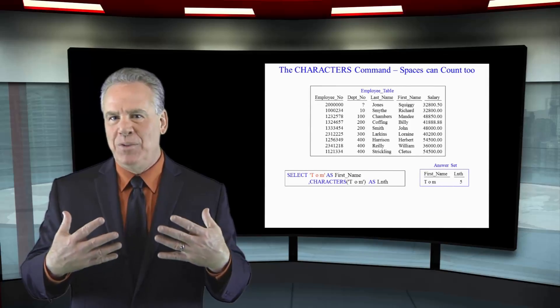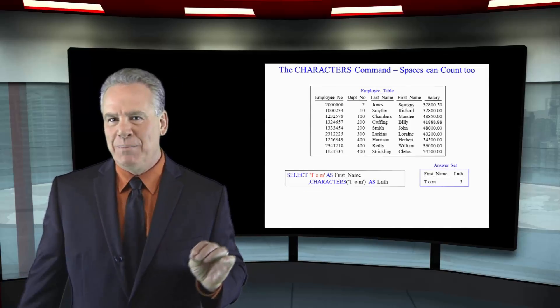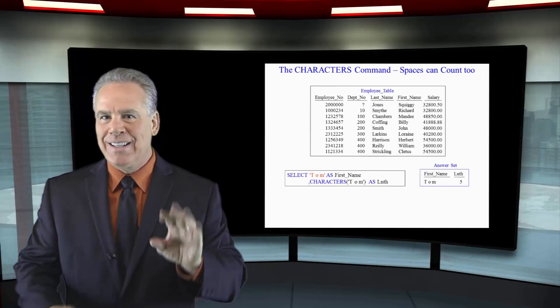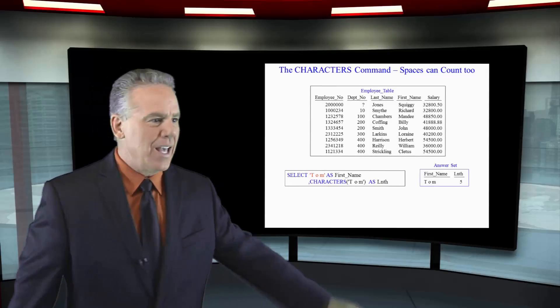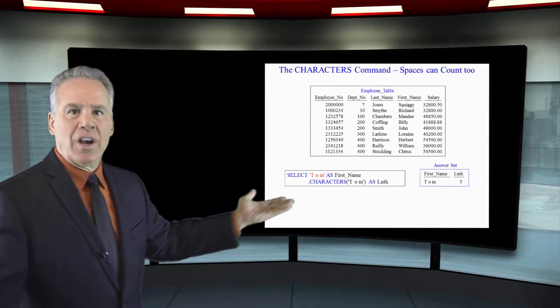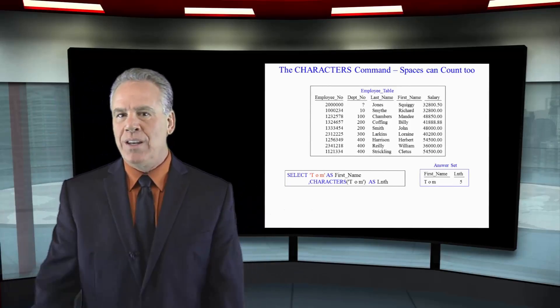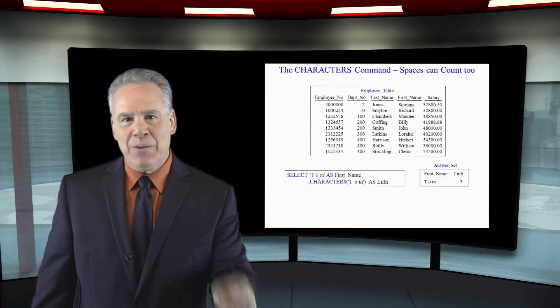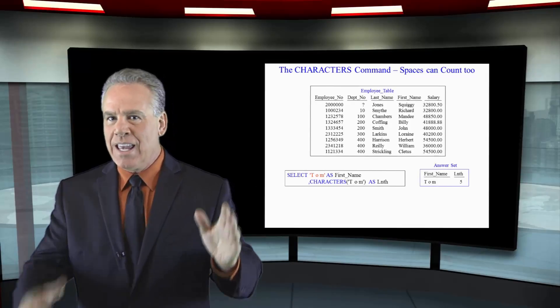Here I have spelled my name, Tom, with spaces in between. T space O space M. And then I said SELECT Tom AS first_name and then count the characters of Tom with those spaces in between. It was five. It will count the spaces in between.